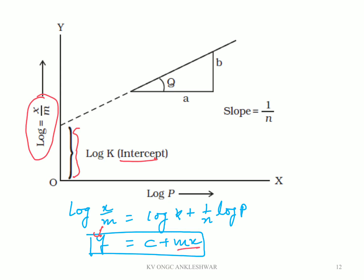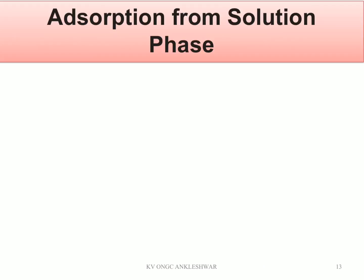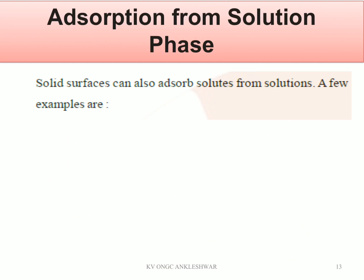The linear form of the Freundlich isotherm is: log(x/m) = log k + (1/n) × log P. Comparing with the line equation y = c + mx: y is log(x/m), c (intercept) is log k, x (variable) is log P, and m (slope) is 1/n. This is the straight-line graph form of the Freundlich adsorption isotherm.